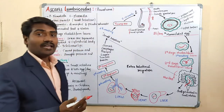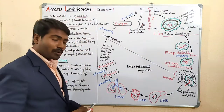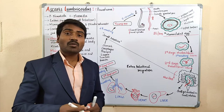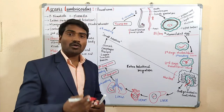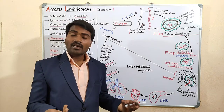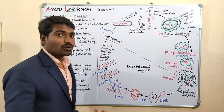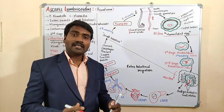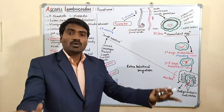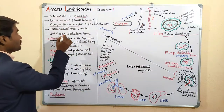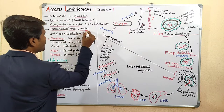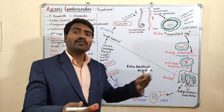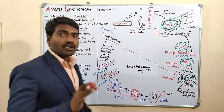It is dimorphic — having two forms, male and female; sexes are separate. It is pseudocoelomate, meaning it has a false coelom. It is commonly called a roundworm. These parasites spread to a new host through contaminated food and water. The infective stage is the second-stage rhabditiform larva.